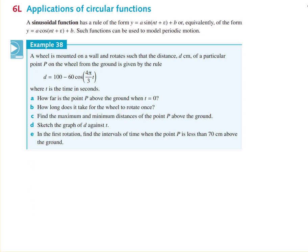So marking in my axes here. Now notice the vertical translation is 100. That's your vertical translation there. So let's mark in 100. Minus 60 cos 4π on 3t. Always nice when you see a π in front of the t because you know that the period is going to be a whole number.